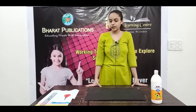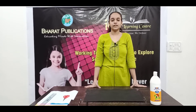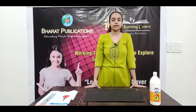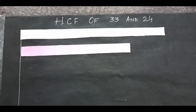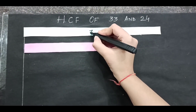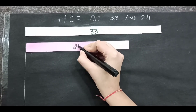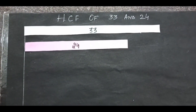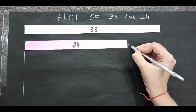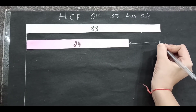Now I am going to cut down two coloured strips of length 33 and 24 units respectively. I have pasted two different colour strips of length 33 and 24 units respectively. The remaining part is equal to 9 units.